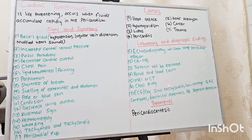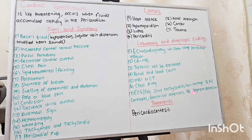Chest X-ray can be performed. They can also do EKG or ECG, which will show sinus tachycardia, low voltage QRS complexes, electrical alternans, and PR segment depression. One of the treatments that can be done immediately is pericardiocentesis.